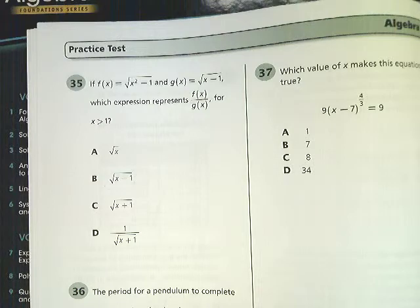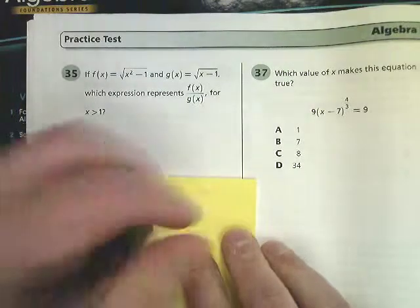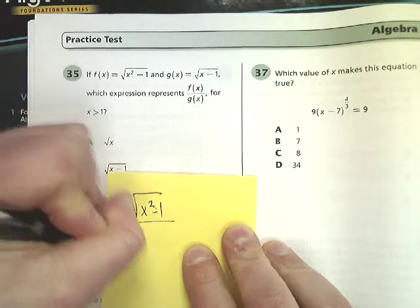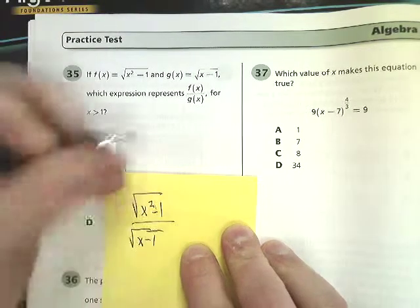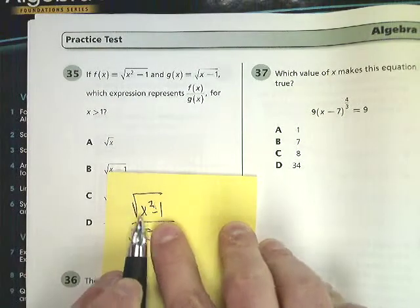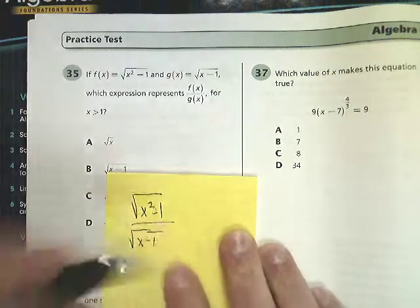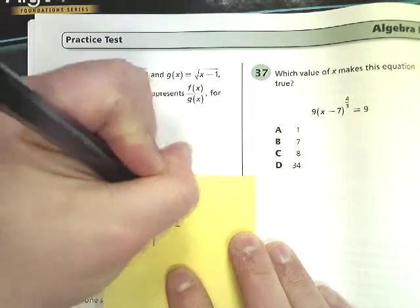So let's just look at them. Square root of x squared minus 1 over the square root of x minus 1. I'm going to factor this out because it's squares, right? x squared and 1 are both squares, and there's a negative in the middle. So I can re-evaluate this question.